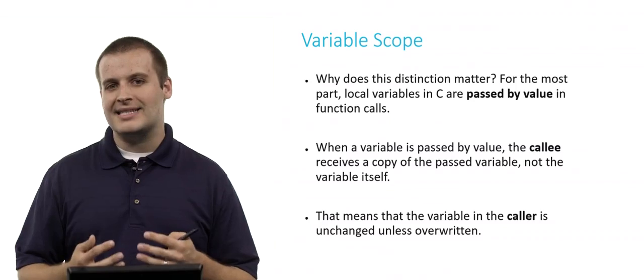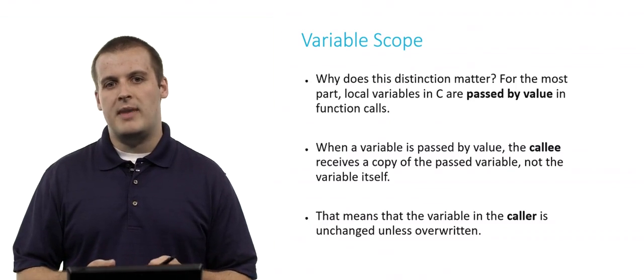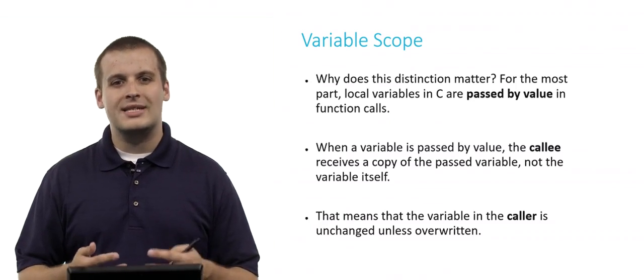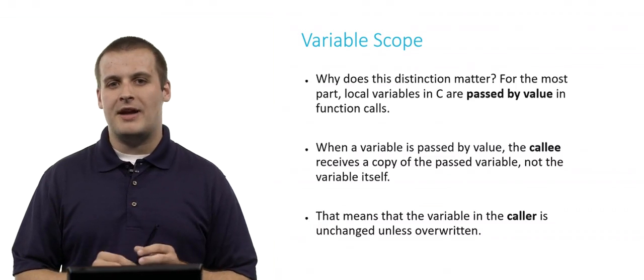Why does this distinction matter? Why do we care whether some variables are local and others are global? Well, for the most part, local variables in C are what's called passed by value when we make a function call. What does that mean? Well, when a variable is passed by value...